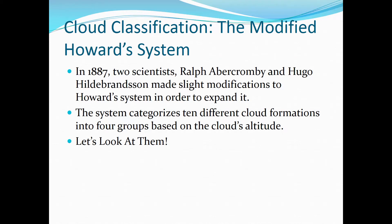The Howard system is good, but it doesn't really give us a lot of what we need to know. So the Howard system, while it was a good start, was modified and improved by two gentlemen named Ralph Abercrombie - not related to Abercrombie and Fitch, at least I don't think so - and Hugo Hildebranson. They made some modifications and came up with what's called the Modified Howard System, which takes clouds and splits them into groups based on the cloud's altitude.